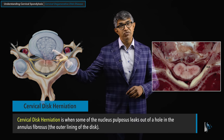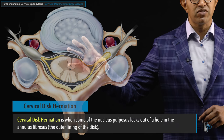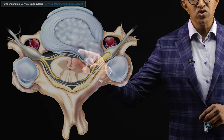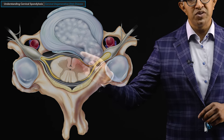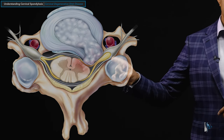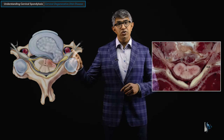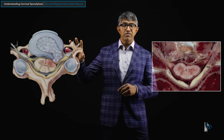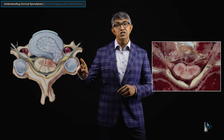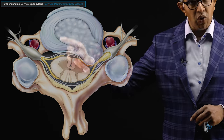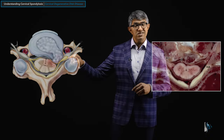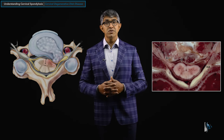Herniations are classified by location. The first type is a midline or paramedian herniation — just off the midline. Another type is a foraminal herniation, where the hole is off to the side and material squeezes primarily in the foramen. The location of the hole in the annulus dictates where the material leaks out, and that dictates what structures are compressed and whether people experience symptoms.